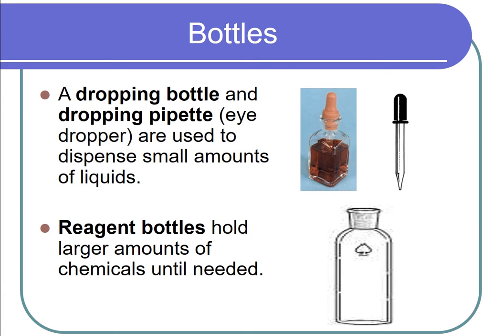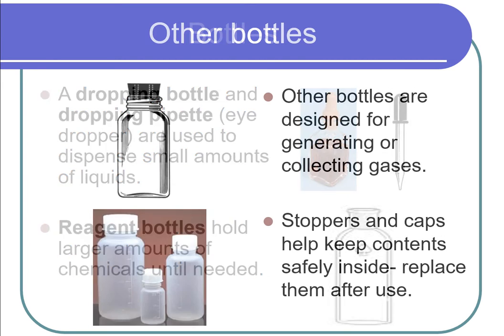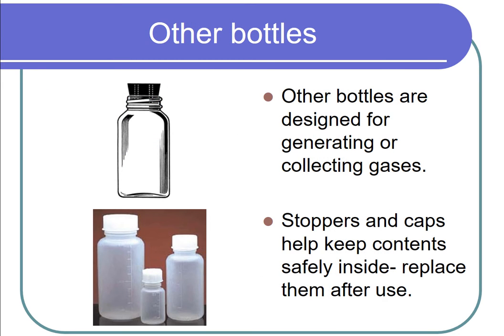A dropping bottle and dropping pipette are used to dispense small amounts of liquids. Reagent bottles hold larger amounts of chemicals until needed. Other bottles are designed for generating or collecting gases.